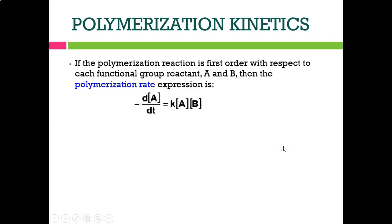If the polymerization reaction is first order with respect to each functional group A and B, we can express the rate as negative dA/dt equals KAB. We assume the concentration of monomer A equals the concentration of monomer B, so the rate equals KA squared.